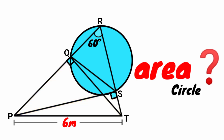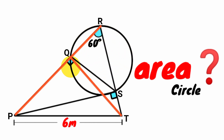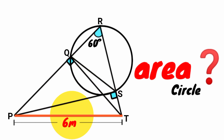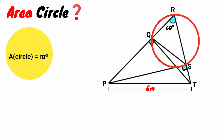Hi everyone, welcome back to another interesting question. We are asked to calculate the area of the circle. We have the size of one angle as 60 degrees, this angle is a right angle, and this is also a right angle. The length of this side is 6 meters. The formula for calculating the area of a circle is pi r squared, where pi is a constant and r is the radius of the circle.